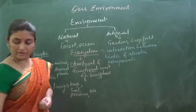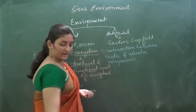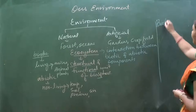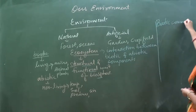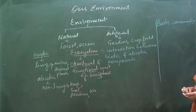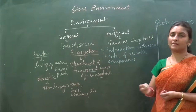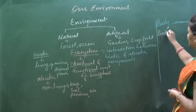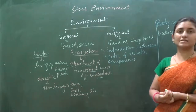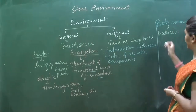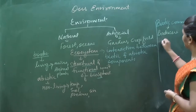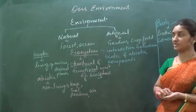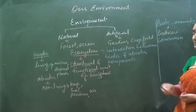Yesterday we also discussed the biotic community, where we covered producers, consumers, and decomposers. The producers are able to prepare their own food by utilizing sunlight through the process of photosynthesis. Next are the consumers, which include primary consumers, secondary consumers, and tertiary consumers, which are dependent on the producers for nutrition.